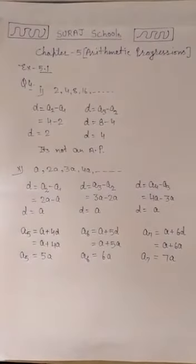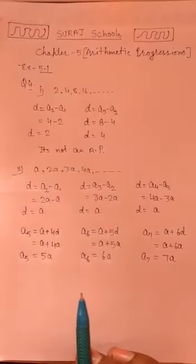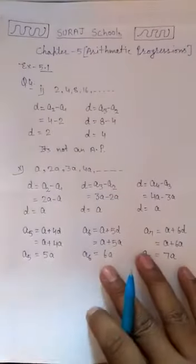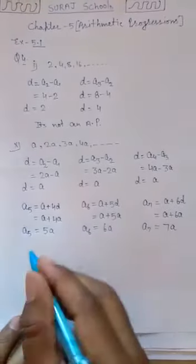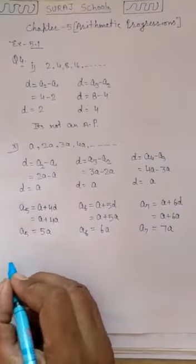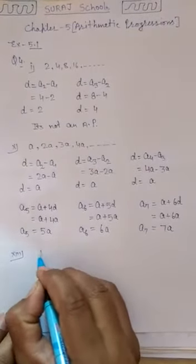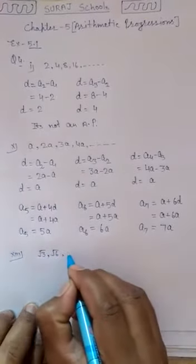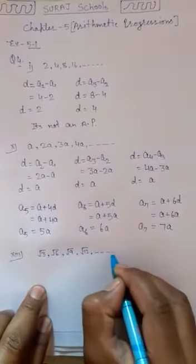So the next 3 terms are 5A, 6A, and 7A. We have explained the 10th part of question 4. Now let's explain one more part — question number 4, part number 13: √3, √6, √9, √12 and so on.